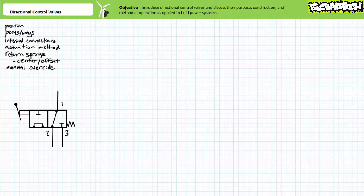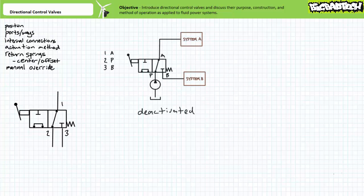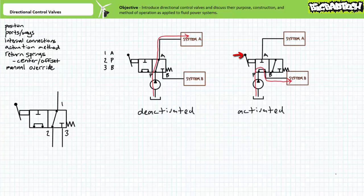Given that these arrows are bidirectional, consider a couple of creative ways this valve can be put to use. Consider a configuration making use of port two as the pressure port, port one as the input to system A, and port three as the input to system B — we have in effect created a selector valve. In the deactivated state, pressurized flow is routed to system A. In the activated state, pressurized flow is routed to system B, thus selecting which port and system receives pressurized flow.